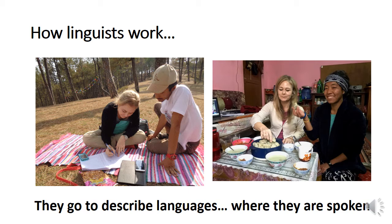How do linguists work when they want to better understand the diversity of languages? The first step is to understand how these languages differ and how they are built. So linguists go to where these languages are spoken, and they patiently describe them — their sounds, their words, their sentences; in other words, their phonetics, phonology, morphology, syntax, and pragmatics. They describe them as precisely as they can, to have a better understanding and to later be able to compare all these languages with each other.